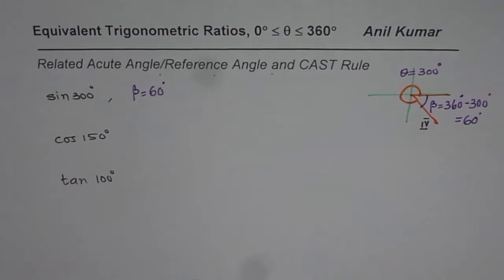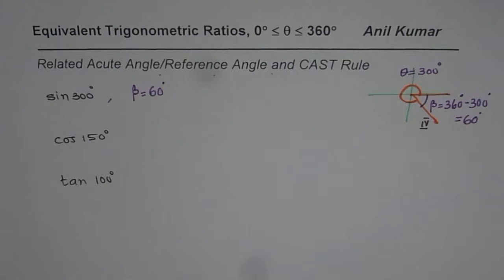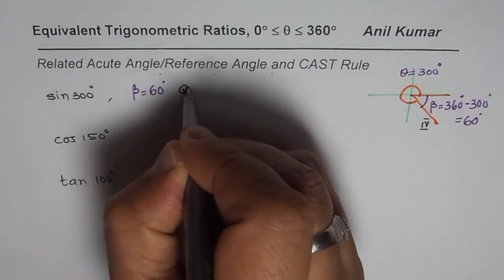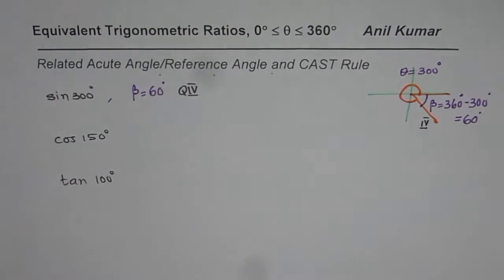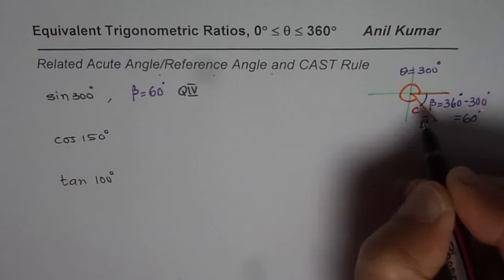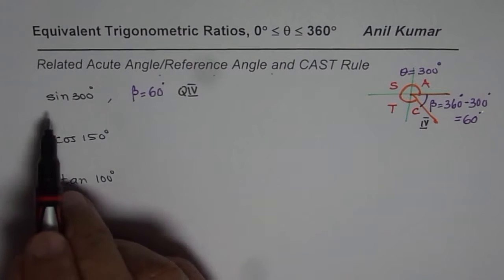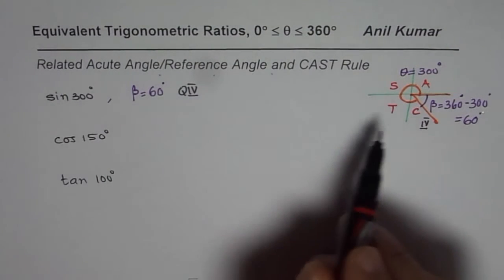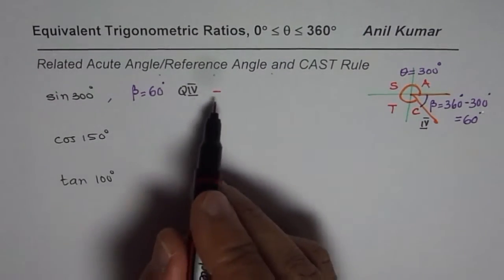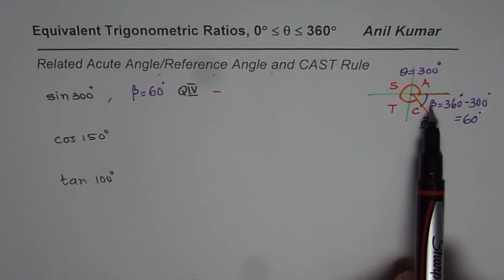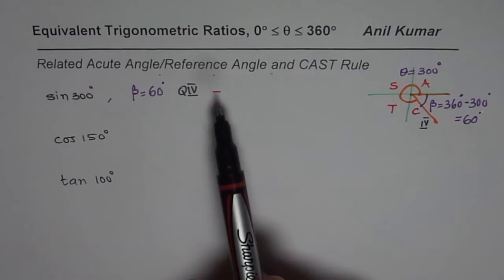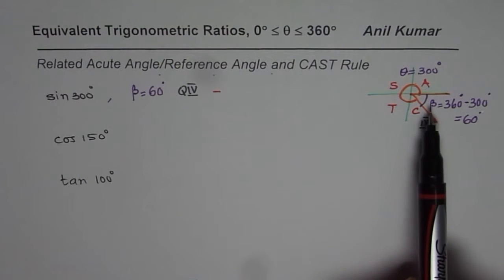The other thing we need to figure out is the quadrant — in this case it is quadrant 4. Applying the CAST rule: cosine is positive in quadrant 4, all are positive in quadrant 1, sine is positive in quadrant 2, and tan is positive in quadrant 3. So sine of 300° in quadrant 4 should be negative, and our related acute angle is 60 degrees.